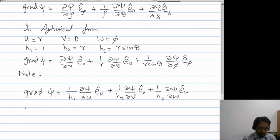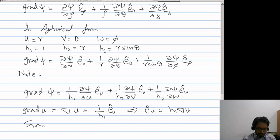Note, this gives us an expression for grad psi. So grad u that is del u would be 1/h1 e_u. So alternately we can write e_u cap as h1 grad u. Similarly, e_v would be h2 grad v and e_w would be h3 grad w.